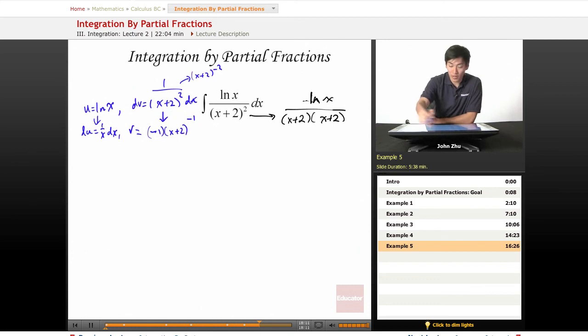Let's plug it in to our integration by parts. So u equals ln of x, v equals negative 1, (x + 2) to the negative 1 minus the integral of v, which is going to be negative 1 over (x + 2) times du, which equals 1 over x dx.